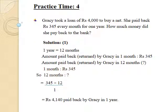So, now let's solve question number 1. 1 month = Rs. 345. So, 12 months, how much? By cross-multiplying, we will get 345 multiplied by 12 divided by 1, which is equal to Rs. 4140 in one year. Therefore, we can say that the amount paid back by Gracie is Rs. 4140 in one year.